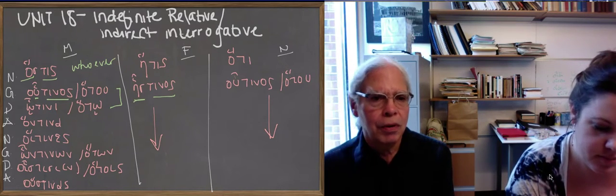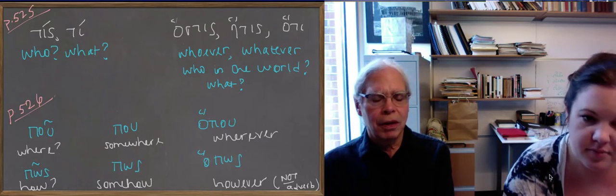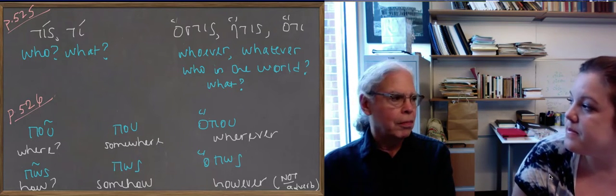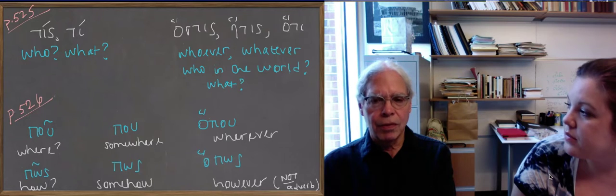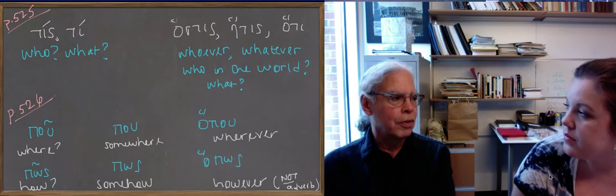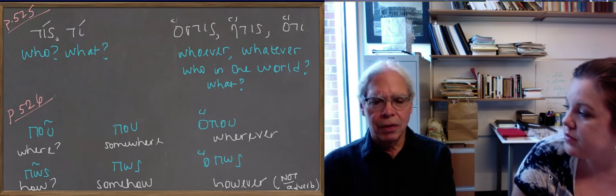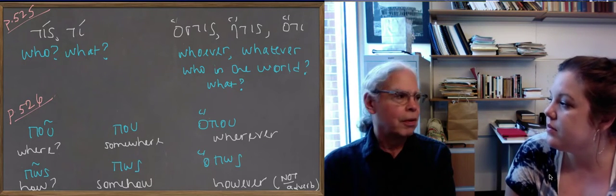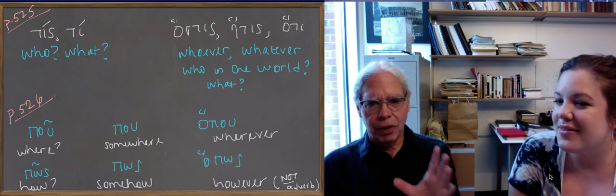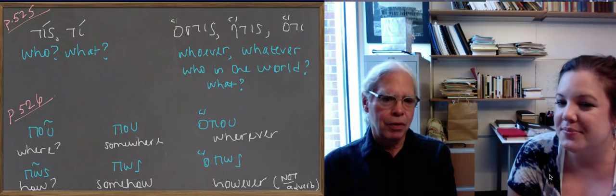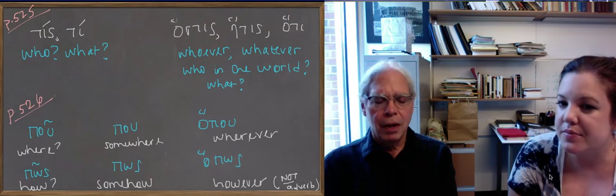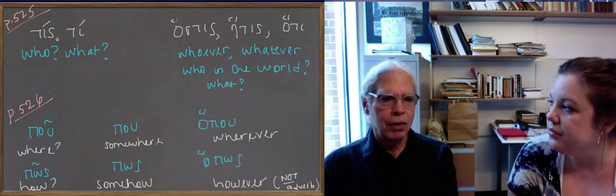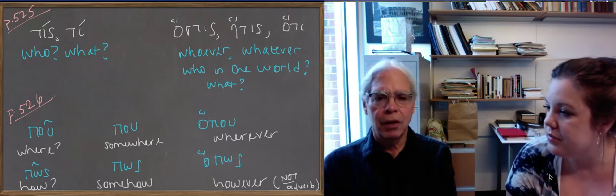Okay, so these are indefinite relative and indirect interrogative. The idea there is that whoever, you can use whoever in sentences that are like conditional sentences. Whoever doesn't like cold water won't swim in the northeast. So that's like a conditional sentence. If anyone doesn't like cold water, they don't swim in the northeast. And so you can have regular conditional sentences. And that's a relative clause, whoever doesn't like cold water.